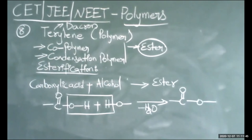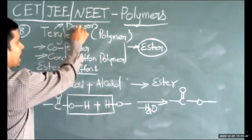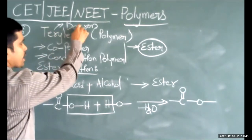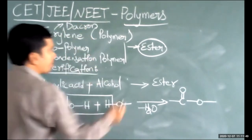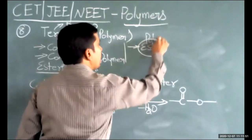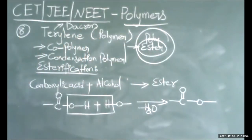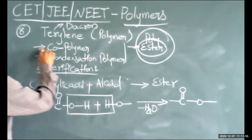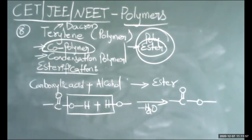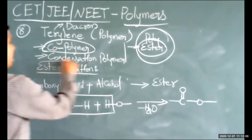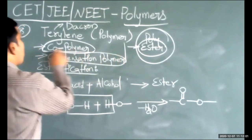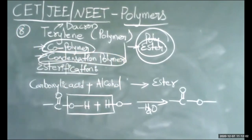Terylene or Dacron is an example of a polyester, a copolymer, and a condensation polymer.